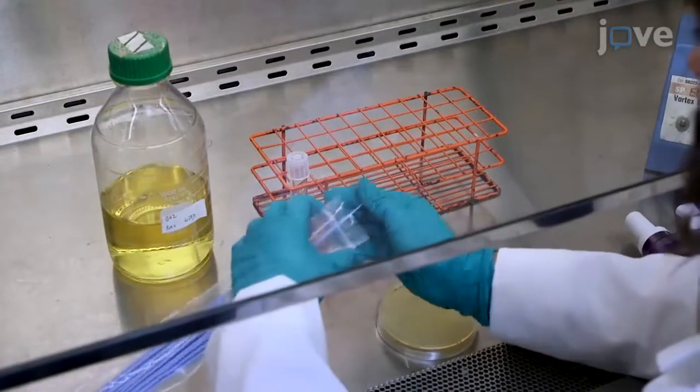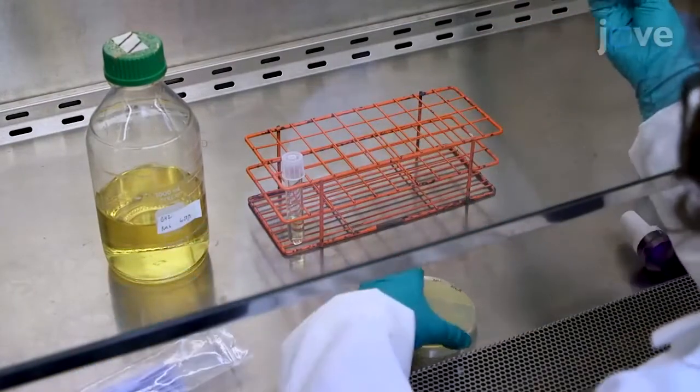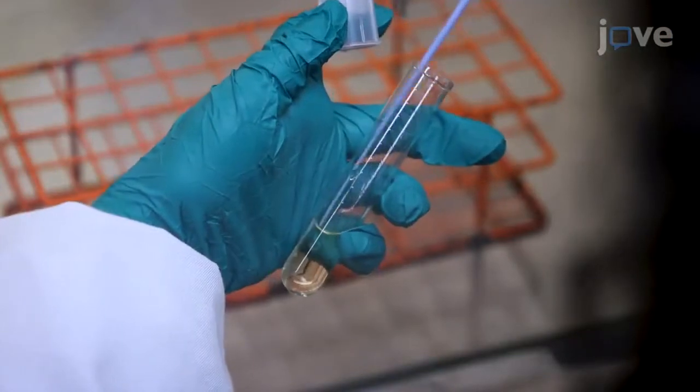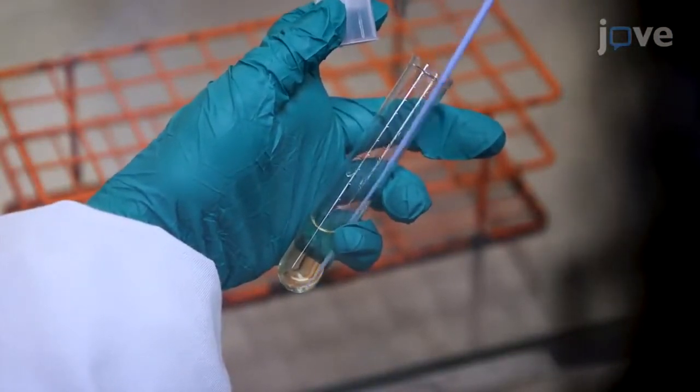Then use a sterile 1 mL inoculating loop to inoculate a bacterial colony into the broth. Swirl the loop to ensure that the clump disperses into the broth.